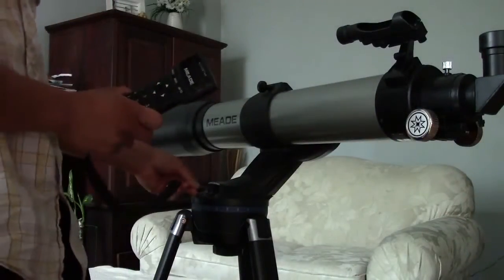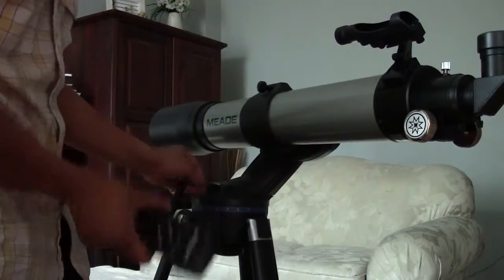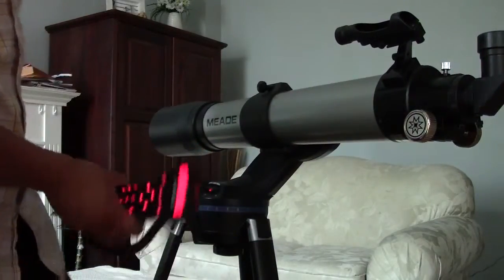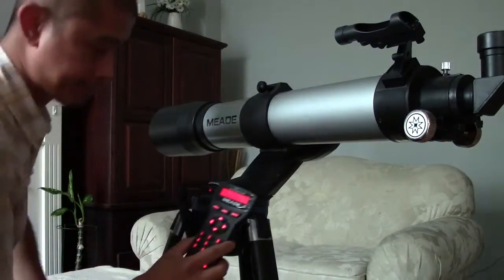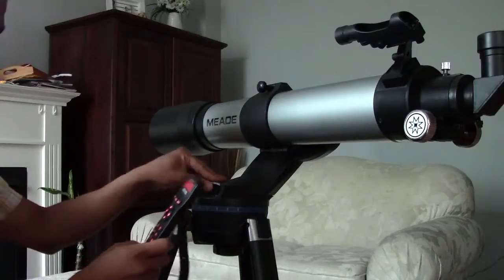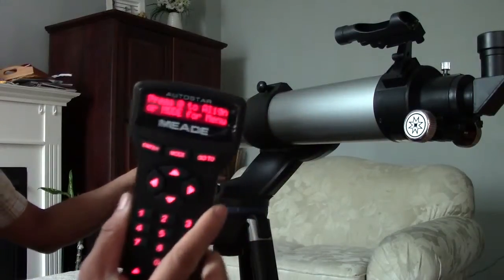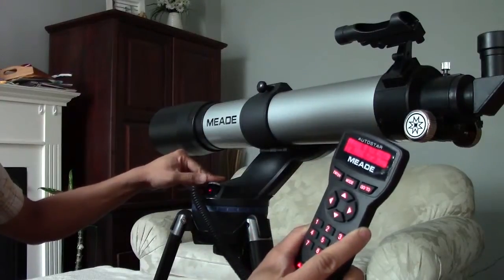You put the keypad into the HBX port and you turn it on. That's what it looks like right now.